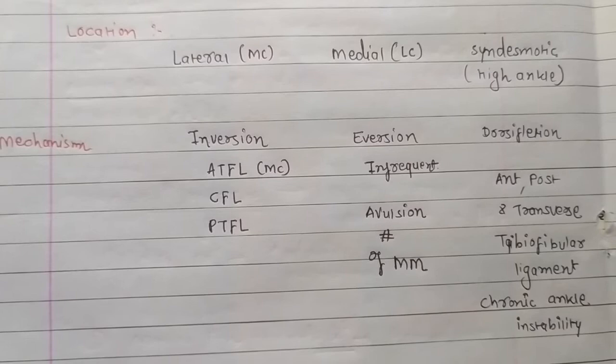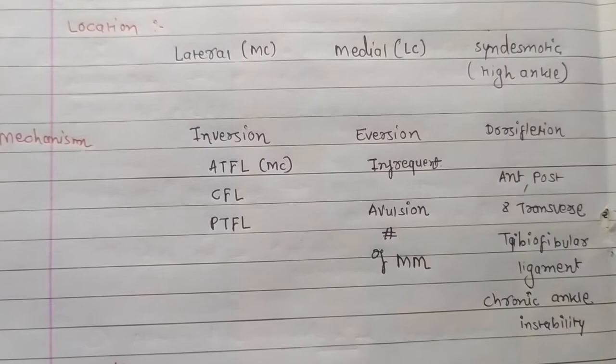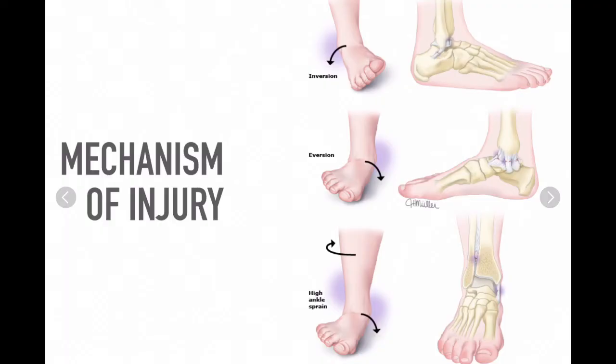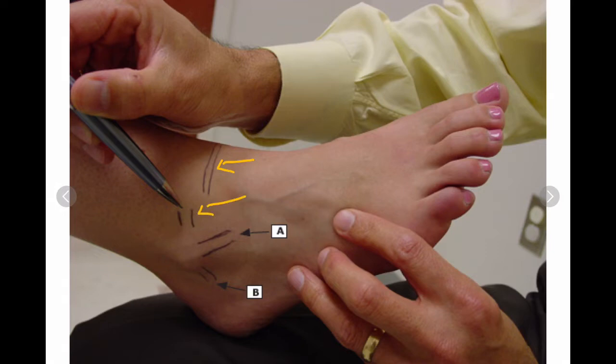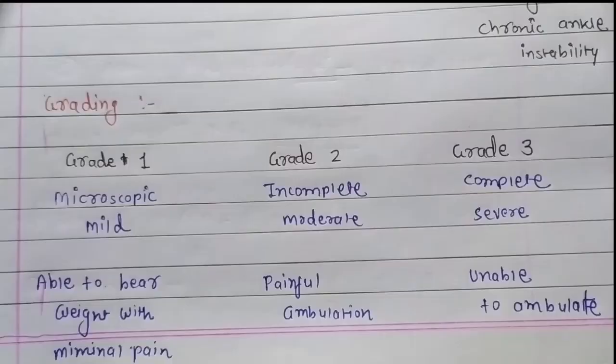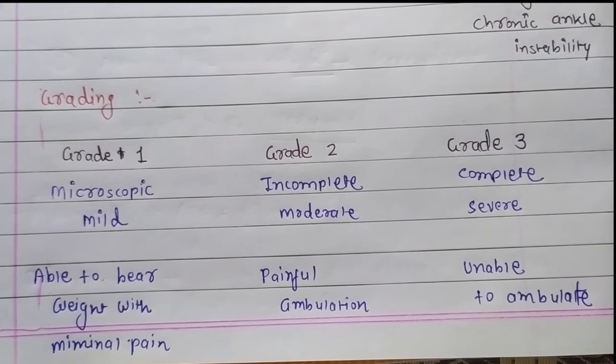Syndesmotic sprain is more recurrent and associated with heterotopic ossification. For mechanism of injury: lateral sprain involves excessive inversion, medial sprain involves excessive eversion, and high ankle sprain involves excessive dorsiflexion. In the diagram, 'A' indicates the anterior talofibular ligament and 'B' indicates the calcaneofibular ligament.